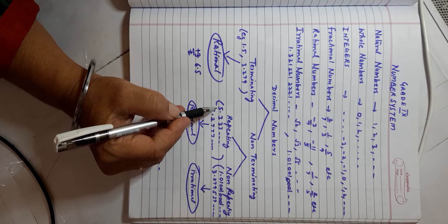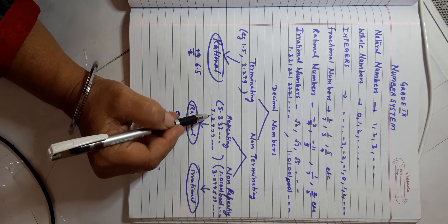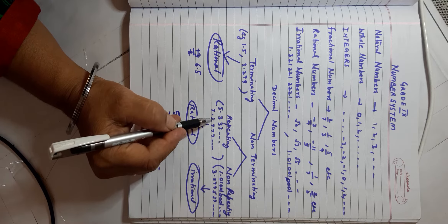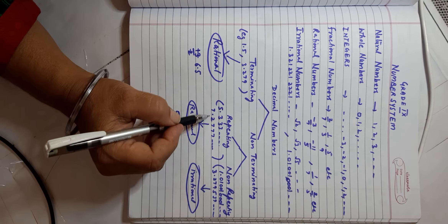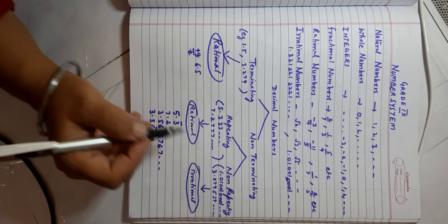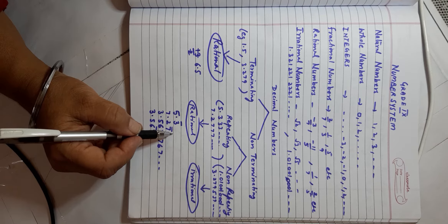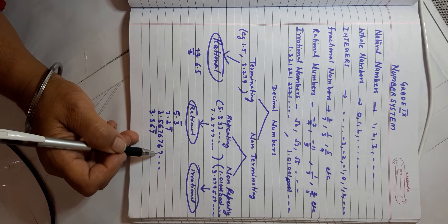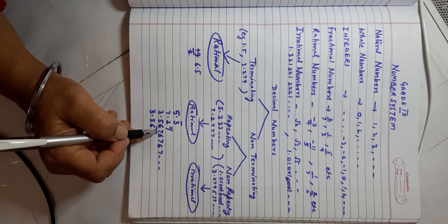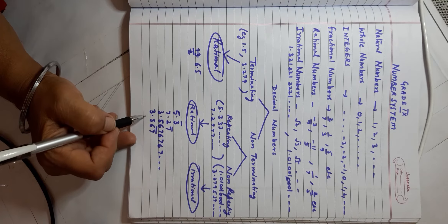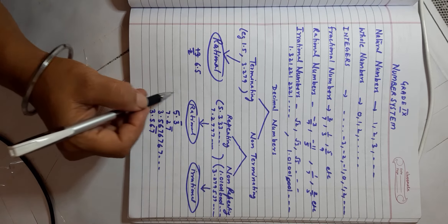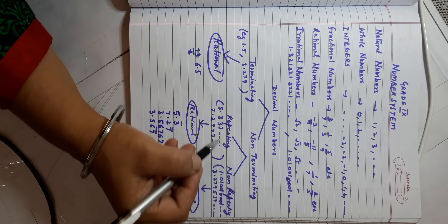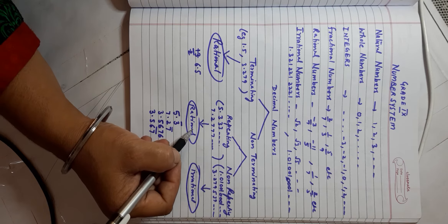For repeating non-terminating decimals, examples include 5.333... and 7.2777... Here I note that 3 is being repeated, so I can write this as 5.3̄. Similarly, 7.2777... can be written as 7.27̄. There are other kinds too, like 3.5676767..., where only 67 repeats every time, written as 3.5̅6̅. These non-terminating repeating numbers can always be converted into rational numbers in the form p/q.